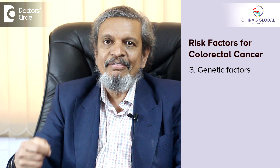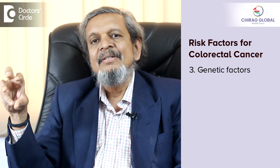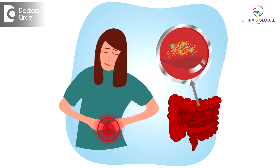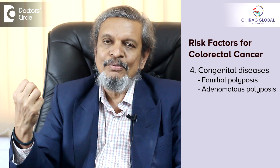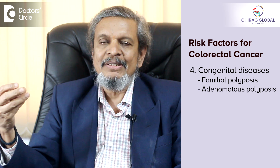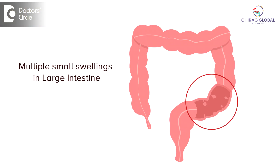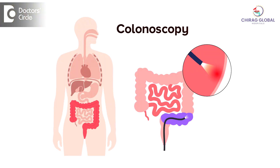The third factor is genetic factors. There are certain diseases which are directly associated with cancer. Especially there is a disease called ulcerative colitis — over a period of 15-20 years, those who have ulcerative colitis can develop cancer more than the rest of the population, so they must get regularly checked. The other one is congenital diseases called familial polyposes and adenomatous polyposes, where multiple benign swellings in the large intestine are likely to turn into cancer. Those diagnosed with it, or if it runs in their families, must get regular colonoscopy done and certain other tests to rule out developing colorectal cancers.